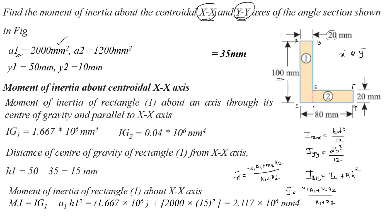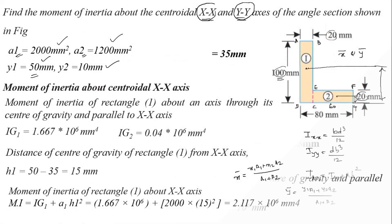Y1, the CG of section 1 from the X axis, equals 100/2 = 50 mm. Y2, the CG of section 2 from the X axis, equals 20/2 = 10 mm. Using the Y-bar formula, Y-bar = 35 mm.